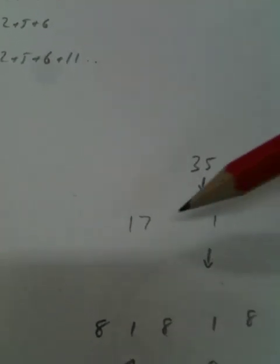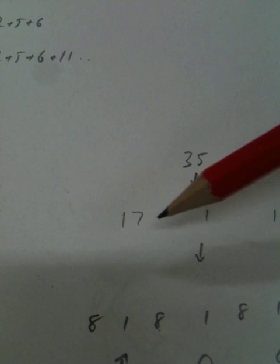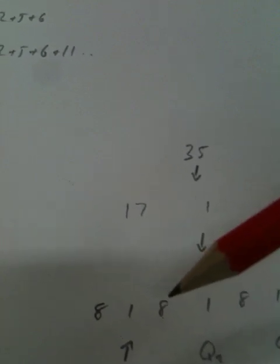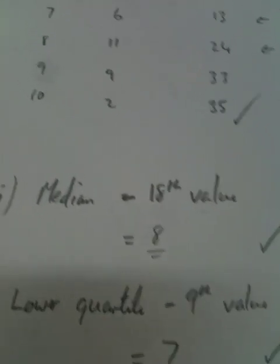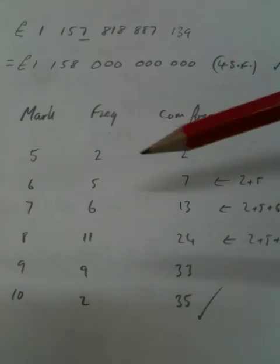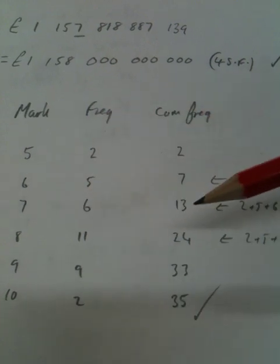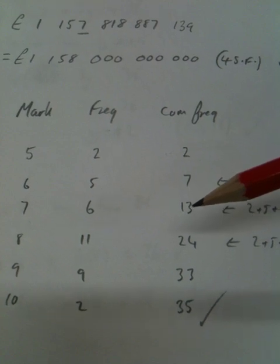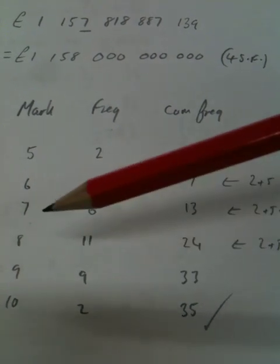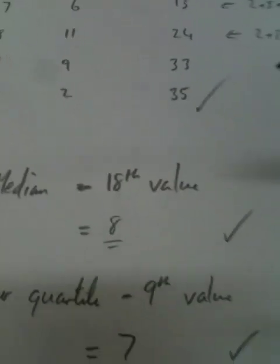The lower quartile is the middle of the bottom half. So there's 17 values in the bottom half. If I have 17 values, I split them up. There'll be 8 values, then the middle one, then another 8 values. So we're looking for the value after the first 8. So we're looking for the 9th value. So the lower quartile will be the 9th value. Again, back up to the list. The first 7 values are 5 or 6. Then up to the 13th value will be 7. So the 8th, 9th, 10th, 11th, 12th, and 13th value will all be 7.